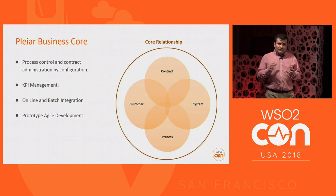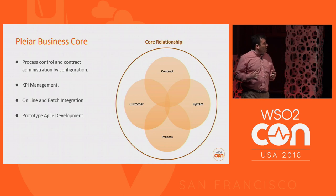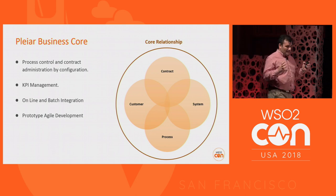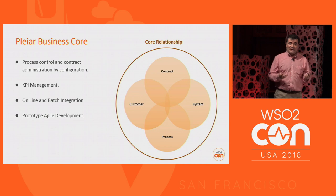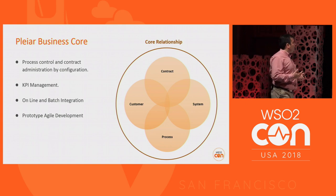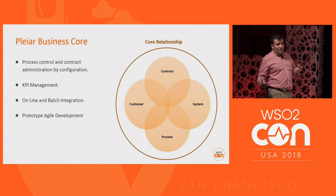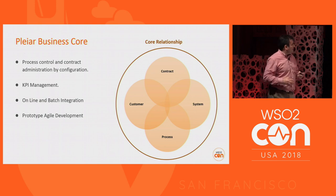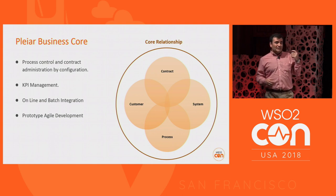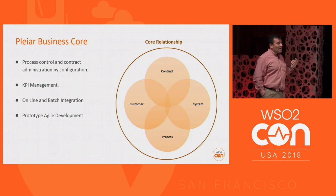The core of the system is based on four concepts. One concept is the contract. The contract is a document, modeled in a MongoDB database. The relationship internally through the systems supports the customer globally. With this, we build agile prototypes, KPA management, and online and batch integration.